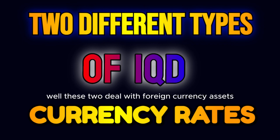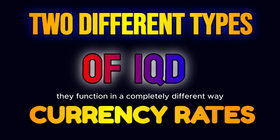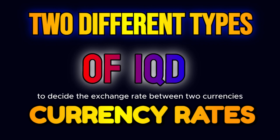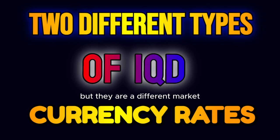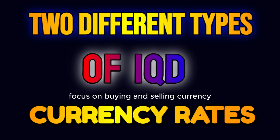While these too deal with foreign currency assets — a foreign currency purchase or a foreign currency payment — they function in a completely different way. They do share a few things in common, such as the use of money to decide the exchange rate between two currencies, but they are a different market. The difference is that the foreign exchange market and foreign exchange rates focus on buying and selling currency as an investor.